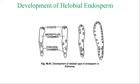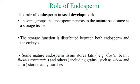The helobial type is neither fully nuclear nor fully cellular — it is intermediate. We can clearly see the development of helobial endosperm toward the micropylar end and chalazal end, which are opposite. Thus we have covered the three types of endosperm: nuclear endosperm, cellular endosperm, and helobial endosperm, and how their development takes place.